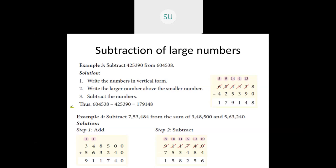Now from 9,11,740 subtract 7,53,484. 0 minus 4 — borrow 1 from 4, so 4 becomes 3 and 0 becomes 10. 10 minus 4 is 6. Then 3 minus 8 — borrow from 7, so 7 becomes 6 and 3 becomes 13. 13 minus 8 is 5. Then 6 minus 4 is 2. Then 1 minus 3 — borrow from the next 1, which becomes 0, and 1 becomes 11. So 11 minus 3 is 8. Then 0 minus 5 — borrow from 9, so 9 becomes 8 and 0 becomes 10. 10 minus 5 is 5. And 8 minus 7 is 1. So the answer is 1,58,256.